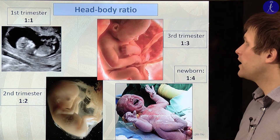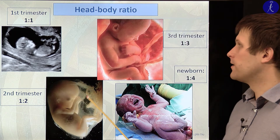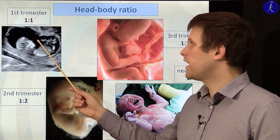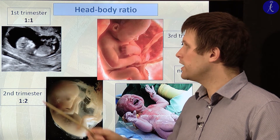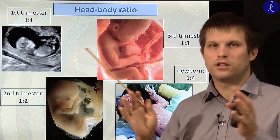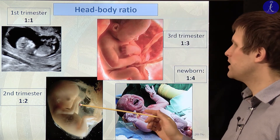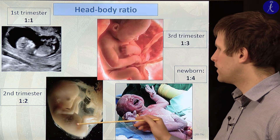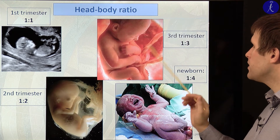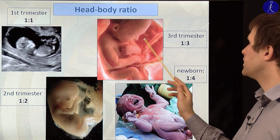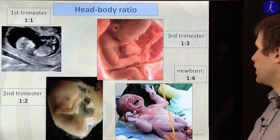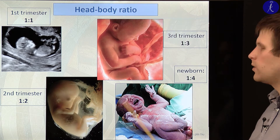As a summary of head-to-body ratio: in the first trimester, almost half of the total body length is the head. During the second trimester, the relative size of the head decreases to about one third of body length. During the third trimester it is approximately one fourth, and in the newborn the head-to-body length ratio is one to four.